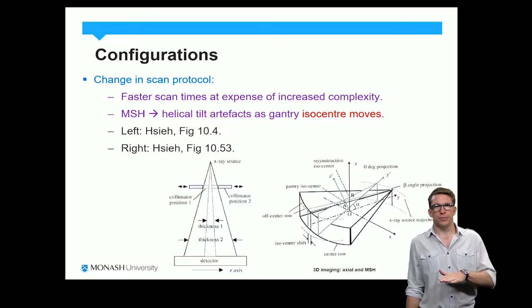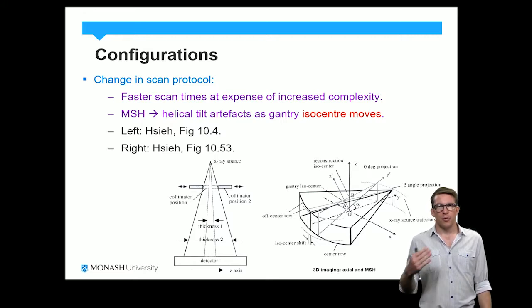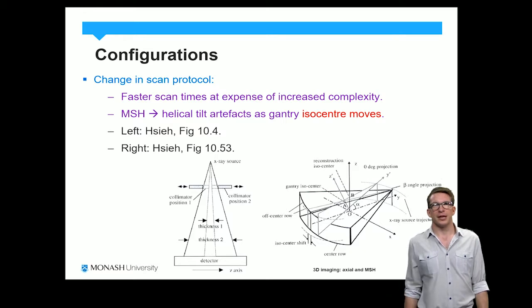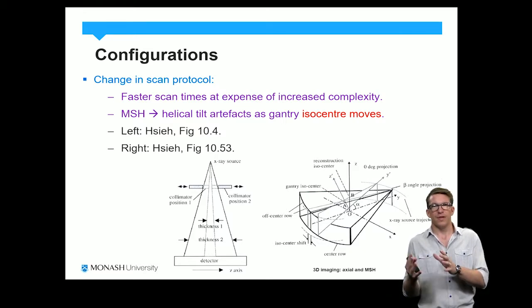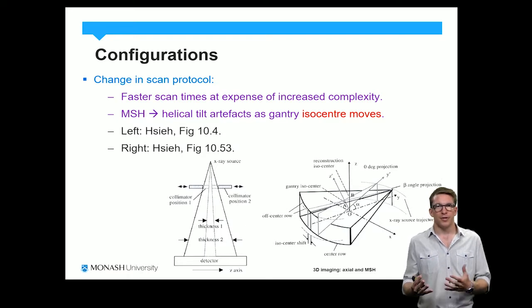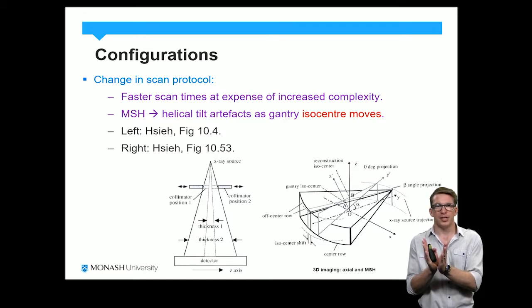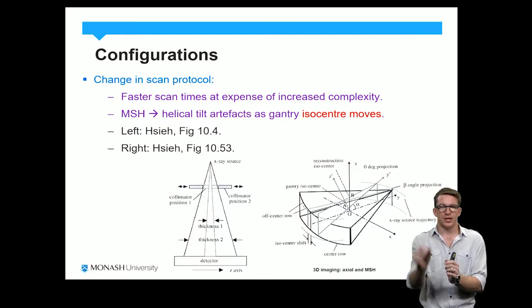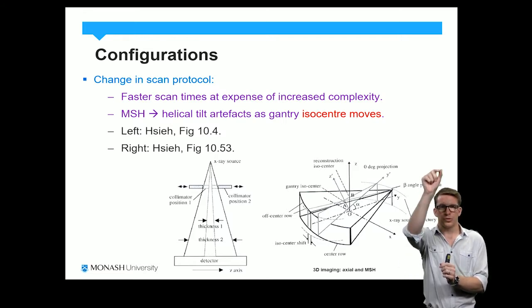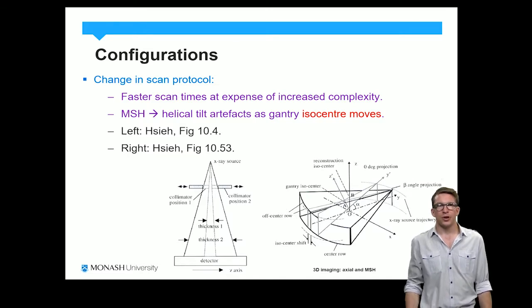If we're going to use gantry tilt to avoid scanning the eyes, the problem with multi-slice helical scanning over single-slice helical scanning is that we have this variability in the isocenter. The isocenter plays a very important role in terms of all of our quantities being defined at the isocenter of the scanner. We have a divergent beam, and by its nature a divergent beam means there is a degree of magnification, so the size of things varies as we move with increasing distance from the source towards the detector. It's important that we account for this in our reconstruction process.